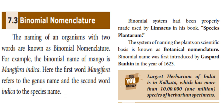Binomial nomenclature. What is binomial nomenclature? The naming of an organism with two words is known as binomial nomenclature. For example, the binomial name of mango is Mangifera indica. Here, the first word Mangifera refers to the genus name and the second word indica is the species name. The binomial system was properly used by Linnaeus in his book Species Plantarum. The system of naming plants on a scientific basis is known as botanical nomenclature. Binomial nomenclature was first introduced by Gaspard Bauhin in the year 1623.